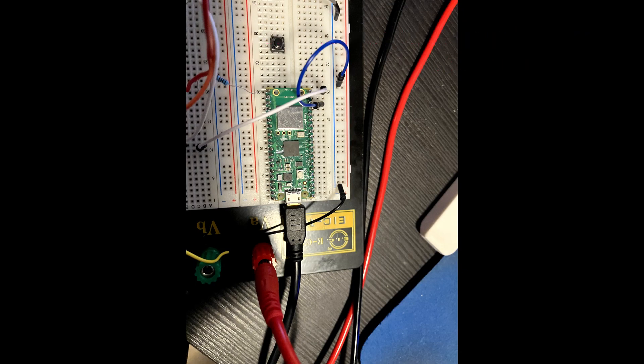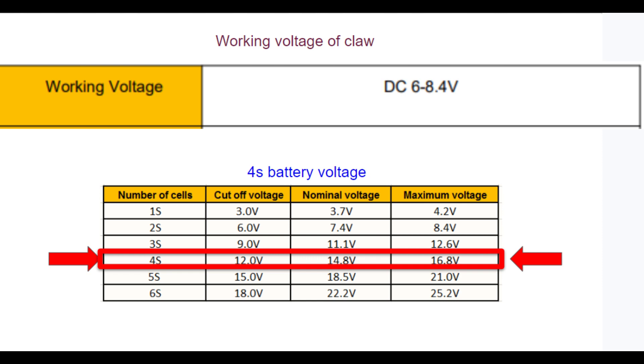The drone's battery is at 4S which is 14.8 volts whereas the claw requires a voltage range of roughly 7.4 volts.